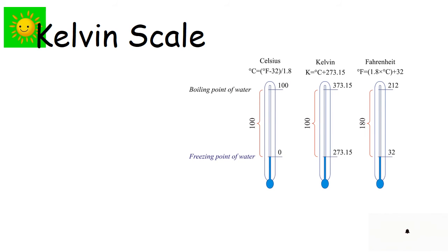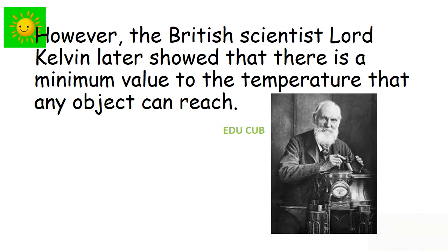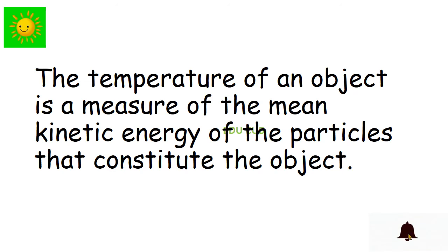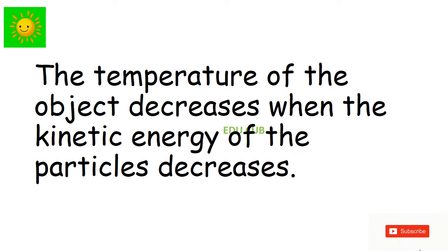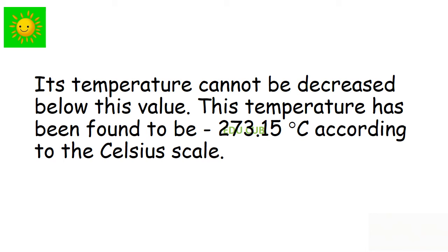This is the Kelvin scale. The zero values of Celsius and the Fahrenheit scale have been chosen according to the wishes of the people who introduced them. However, the British scientist Lord Kelvin later showed that there is a minimum value to the temperature that any object can reach. This temperature is known as the absolute zero temperature. The temperature of an object is a measure of the mean kinetic energy of the particles that constitute the object. The temperature of the object decreases when the kinetic energy of the particles decreases. When the kinetic energy of all particles become zero, the temperature of the object reaches the absolute zero. Its temperature cannot be decreased below this value.